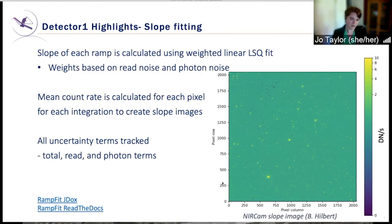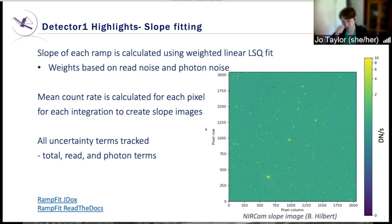Finally, we have the slope fitting step. The slope of each ramp is calculated using a weighted linear least squares fit, where the weight is based on the read noise and the photon noise. The mean count rate is calculated for each pixel for each integration to create a slope image per integration. This is an example of a slope image for NIRCam. We also average across all integrations to create one single count rate image. Along the way, we keep track of all uncertainty terms, including the total, the read noise, and the photon noise terms.